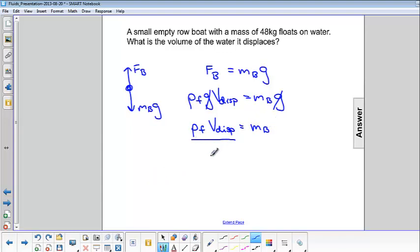If we're looking for the volume displaced, we can divide both sides by the density of the fluid. So, the volume displaced is equal to the mass of the boat divided by the density of the fluid.